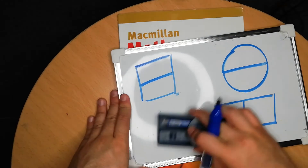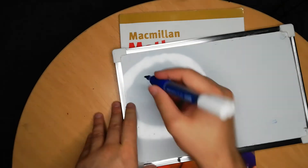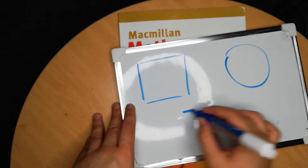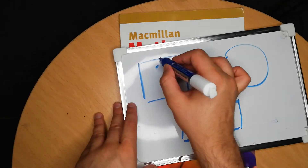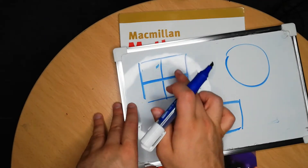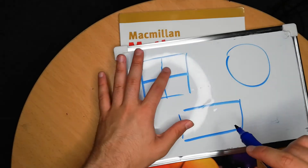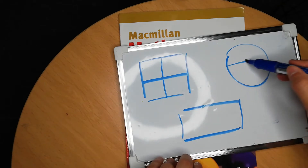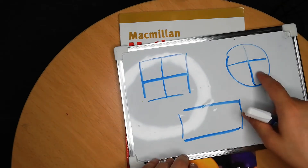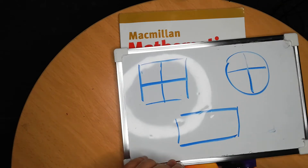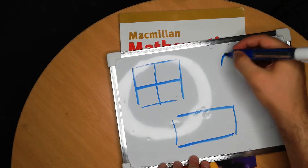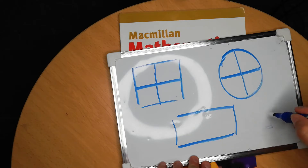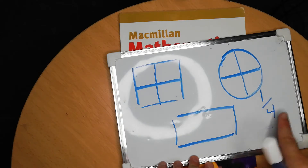Now we did a bit more than half for the other shapes — square, circle, and rectangle. We had something called quarter. Quarter has to have four equal parts. So we call this a quarter. Is this a quarter? No, because these shapes are bigger. I'll draw it again to make it proper — all these shapes are the same, so we can call it a quarter.